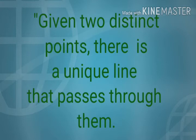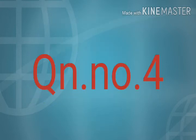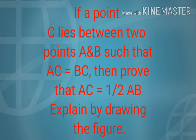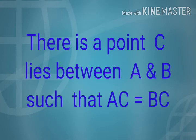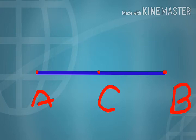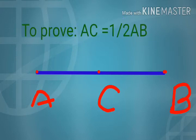Now question number 4: if a point C lies between two points A and B such that AC equals BC, then prove that AC equals half of AB. In the question, it is given that there is a point C lying between A and B. We draw a line segment AB and mark a point C such that AC equals BC. It is given AC and BC are equal. We need to prove AC equals half AB.